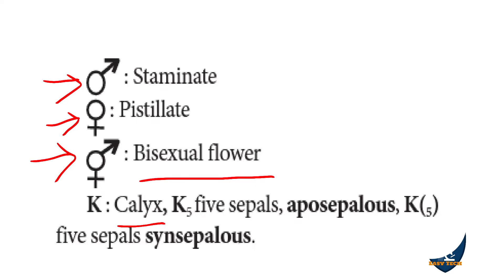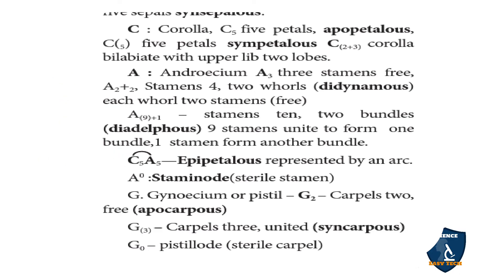Calyx is represented by K. K5 without brackets means five free sepals — polysepalous. K with the number inside brackets, e.g., K(5), means five fused sepals — synsepalous. Corolla is represented by C. C5 without brackets means five free petals — polypetalous. C(5) with brackets means five fused petals — sympetalous. C(2+3) represents bilabiate, meaning the upper lip has two lobes.